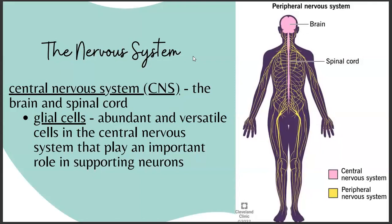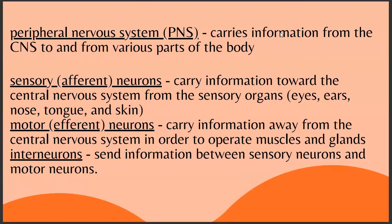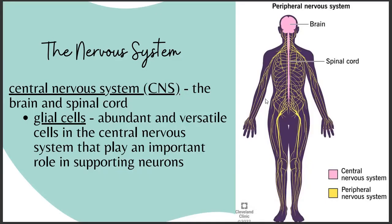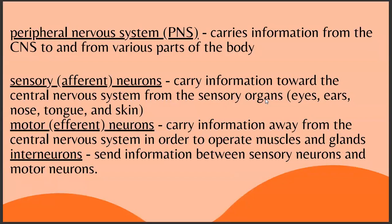Now onto the nervous system. The two branches are the central nervous system (CNS) — the brain and spinal cord, also containing glial cells that support neurons — and the peripheral nervous system. In pictures, the CNS is shown in pink: brain and spinal cord. The peripheral nervous system (PNS) carries information from the brain and spinal cord to and from various parts of the body.